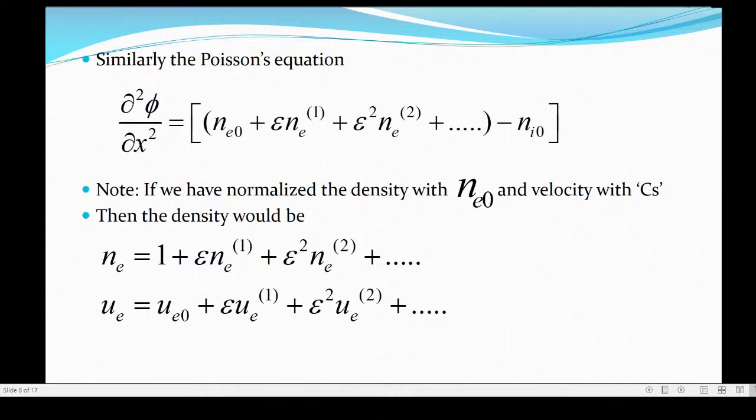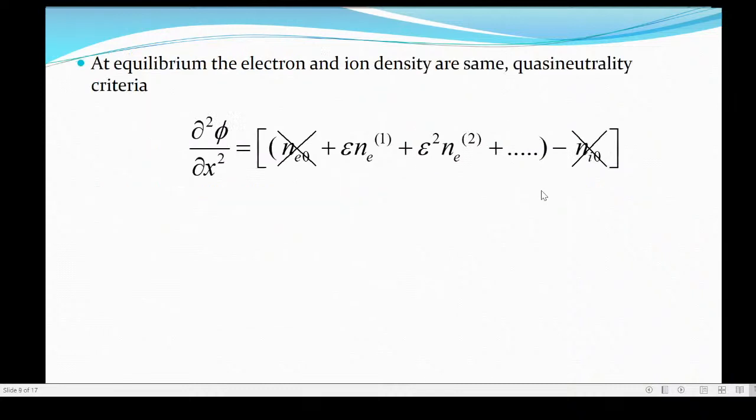If we have normalized the density with n_e0 and the velocity of C_s, as I have said earlier, this is a normalized quantity - it can be 0, it may not be 0 depending upon the problem. Similarly, we have something for phi. At equilibrium if the electron and ion density are same, the quasi-neutrality criteria n_e0 equals n_i0, from that we just cancel out.